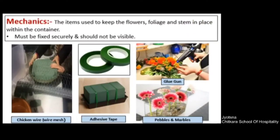Mechanics — any item or tool that is used to keep all your plant material, flowers, foliage, and stems in place properly within the container will be called mechanics. Most of the time these mechanics are fixed securely and they should not be visible in the final product of your flat arrangement. So you have chicken wire, which is also called wire mesh net, and this is used to secure and fix the oasis.